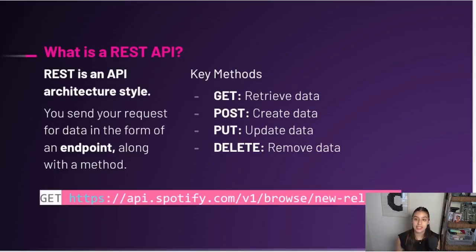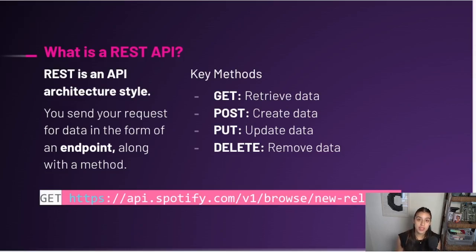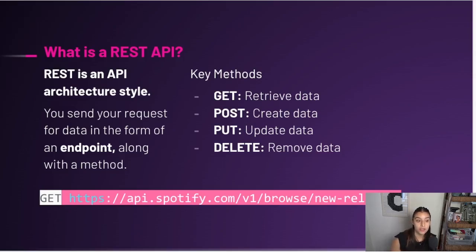So what is a REST API? REST is an API architectural style — it means the API has to follow a set of rules to be considered REST. For REST, you send requests for data in the form of an endpoint along with a method. The key methods are GET, POST, PUT, and DELETE — you can retrieve data, create data, update data, or delete data. In any request you need a method and then the endpoint, which is a link that looks like: https://api.spotify.com/...